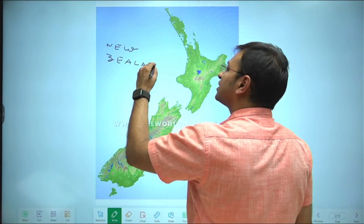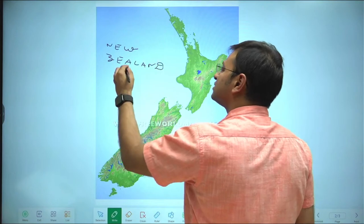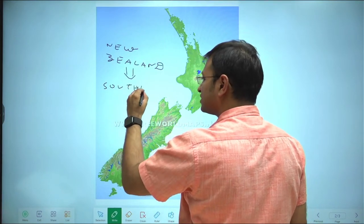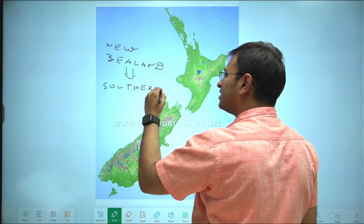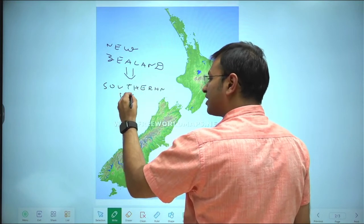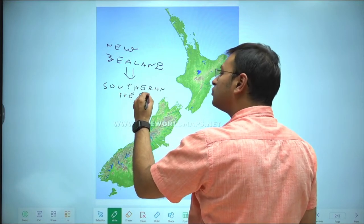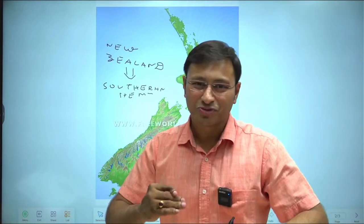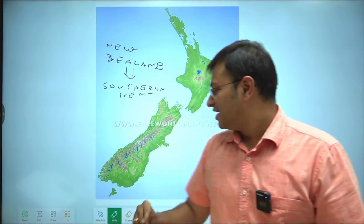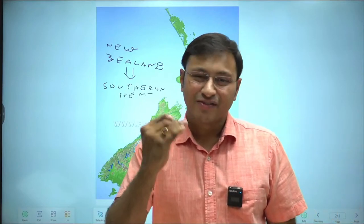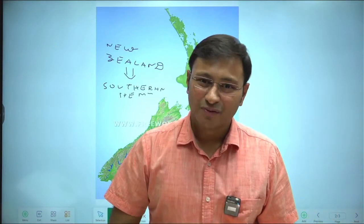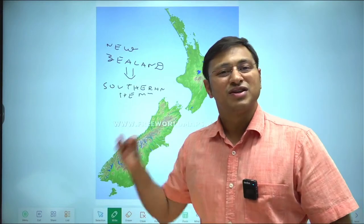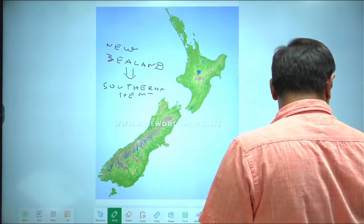New Zealand is a country which is completely in the southern hemisphere — entirely to the south of the equator. So right now if you go to New Zealand, you will be having winters because New Zealand is to the south of the equator while we are having summers.